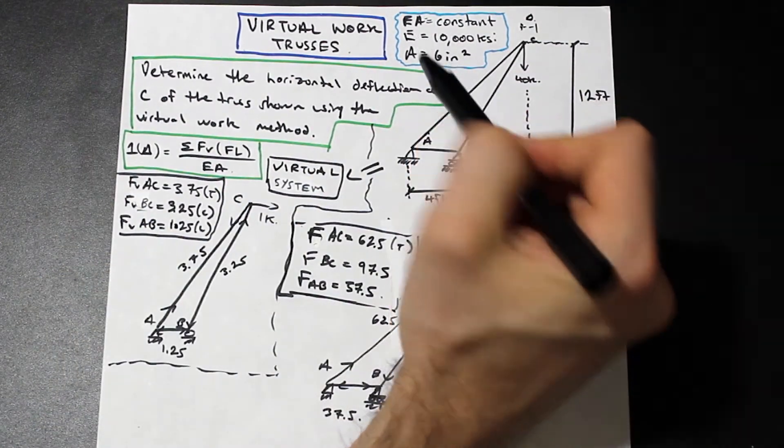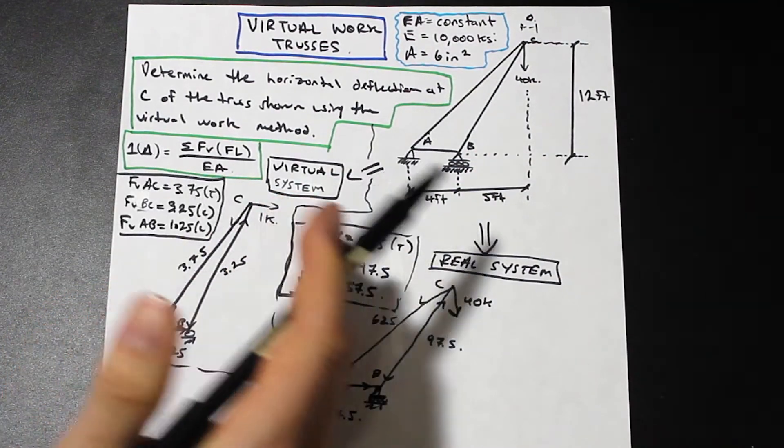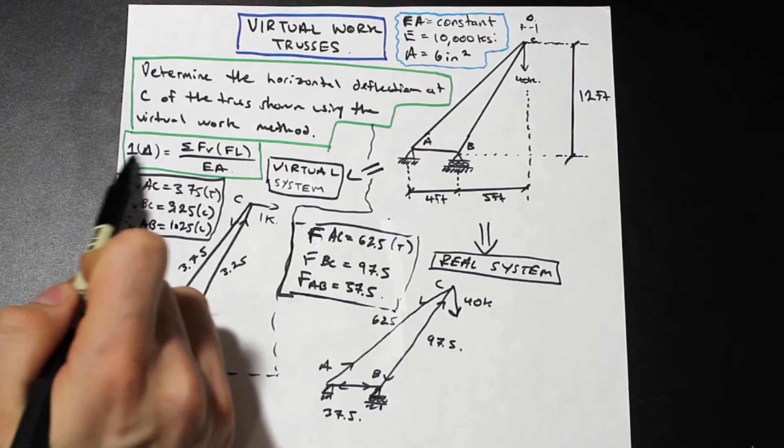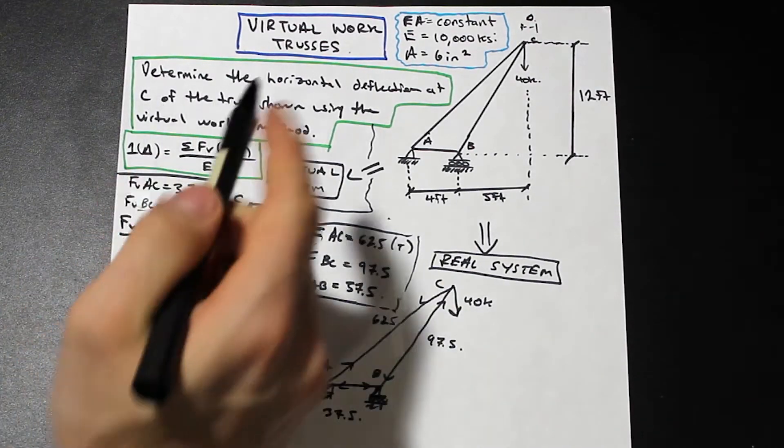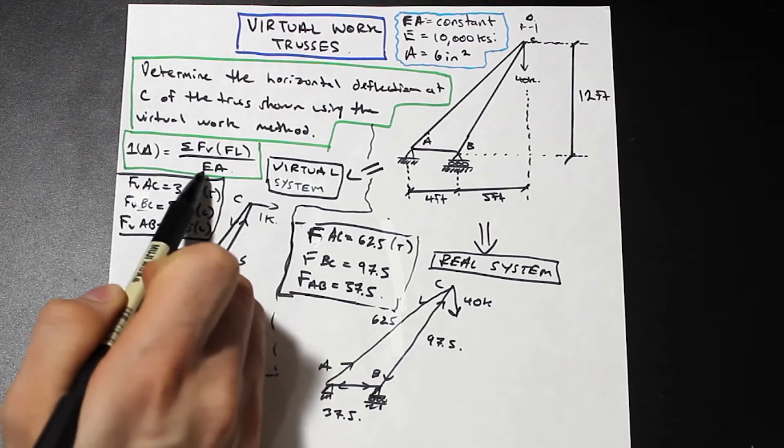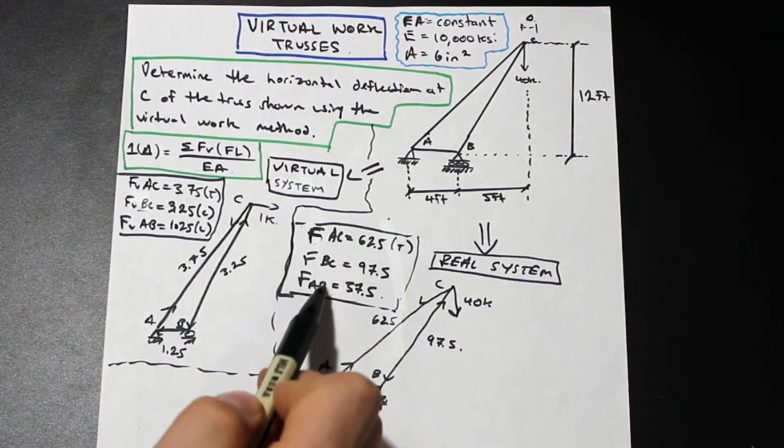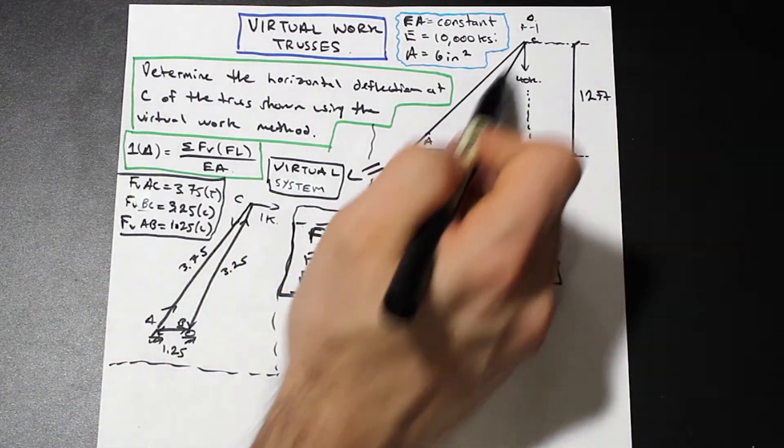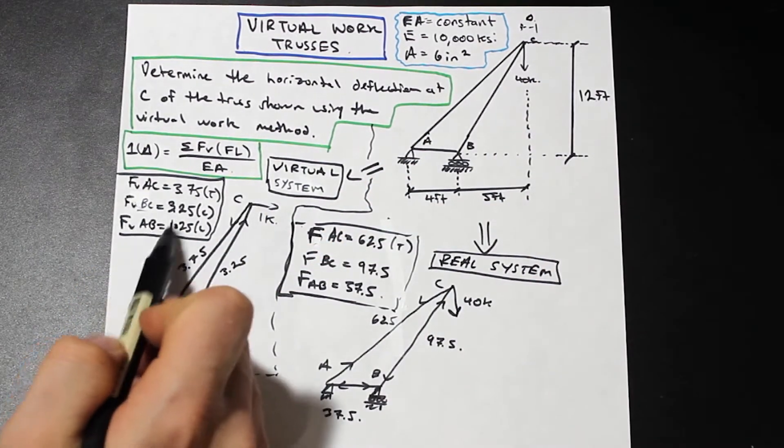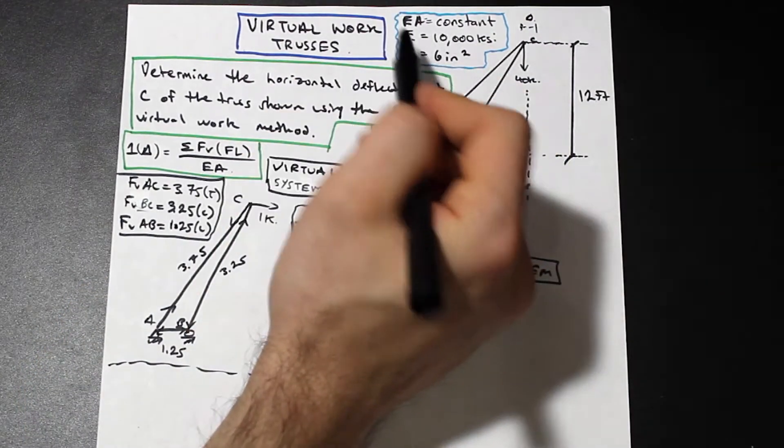What we needed to do is we needed to find the axial force of the virtual system for each member, and we needed to find the axial force in the real system for each member. And the question, we're given E and we're given A. If we take a look at the formula here, this is the formula for the deflection at some point using the virtual work method. We have the sum of FV times F times L over EA. FV is these values, F is these values, L is just the length of each member, E is given modulus of elasticity, and area is cross-sectional area and it's constant throughout.